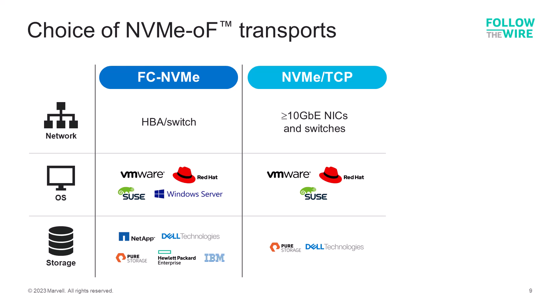Just like with SCSI storage, there are really only two transport options for NVMe over fabrics: FC NVMe over fiber channel, and NVMe over TCP running on ethernet. OS support is good with both — VMware and Linux support either, and FC NVMe is also supported in Windows Server. From a storage perspective, all tier one storage providers have arrays today that support FC NVMe. Dell and Pure Storage are leading the way for NVMe over TCP, with other vendors having it on the roadmap as well.